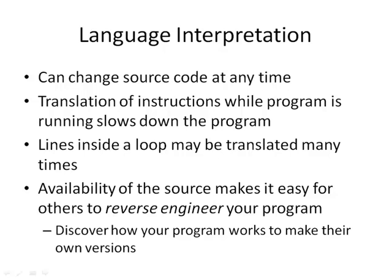There are some advantages in that the code is often much more flexible and you can change the source code at any time. However, the translation of instructions while the program is running slows down operation, because it's not just carrying out the instructions but also converting them to machine code as it goes. Lines inside a loop might be translated many times, and the availability of source code makes it easy for others to reverse engineer the program.